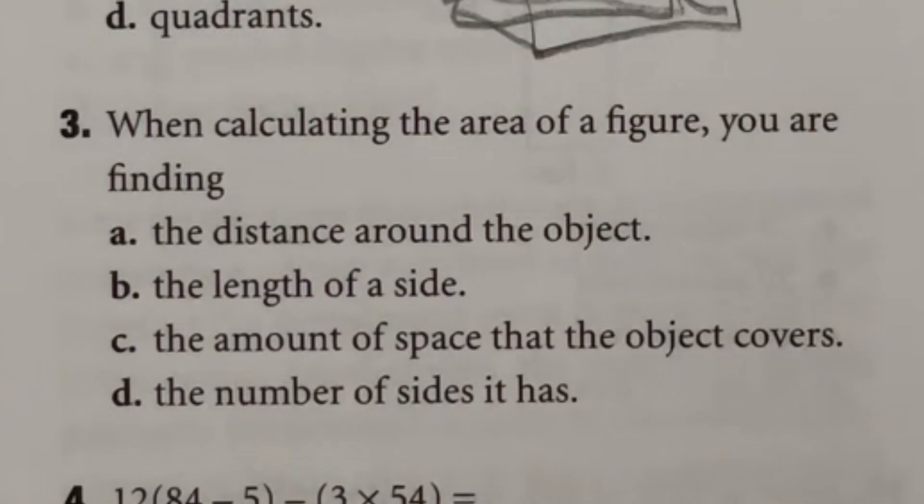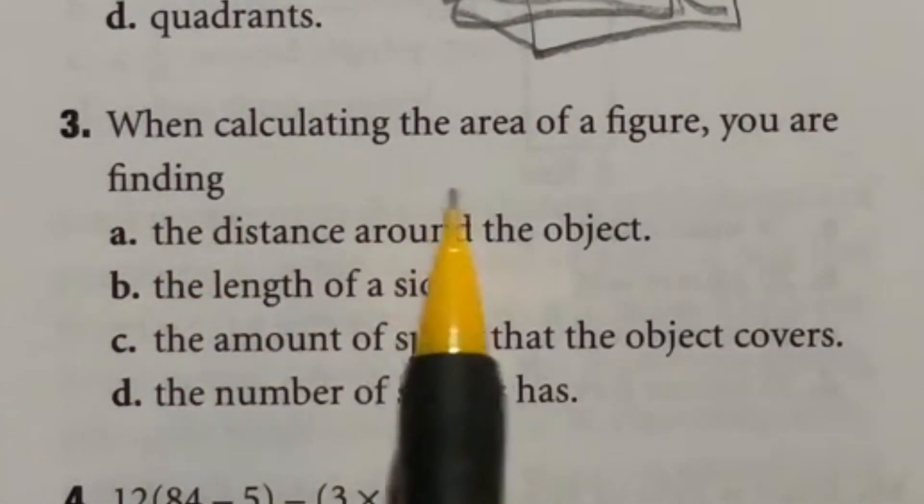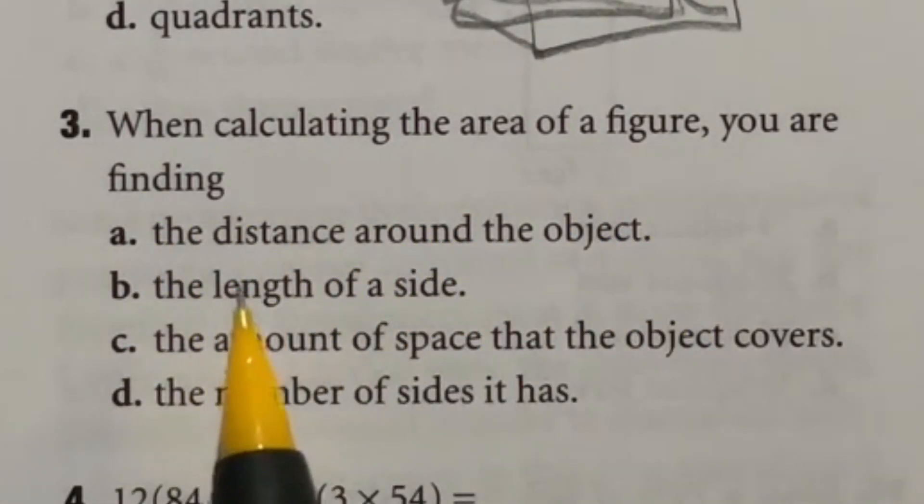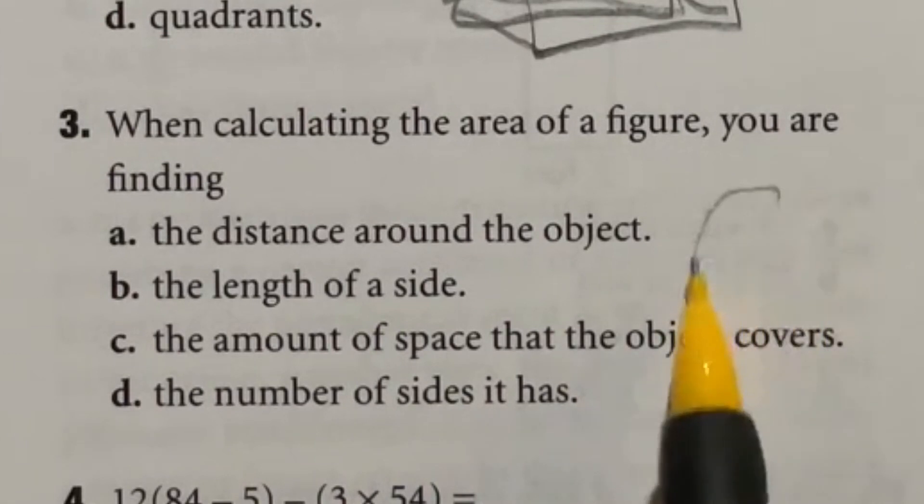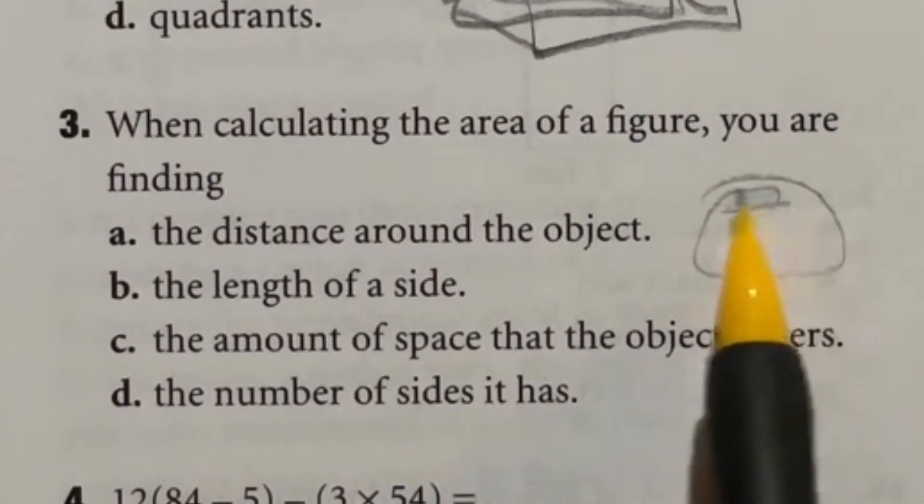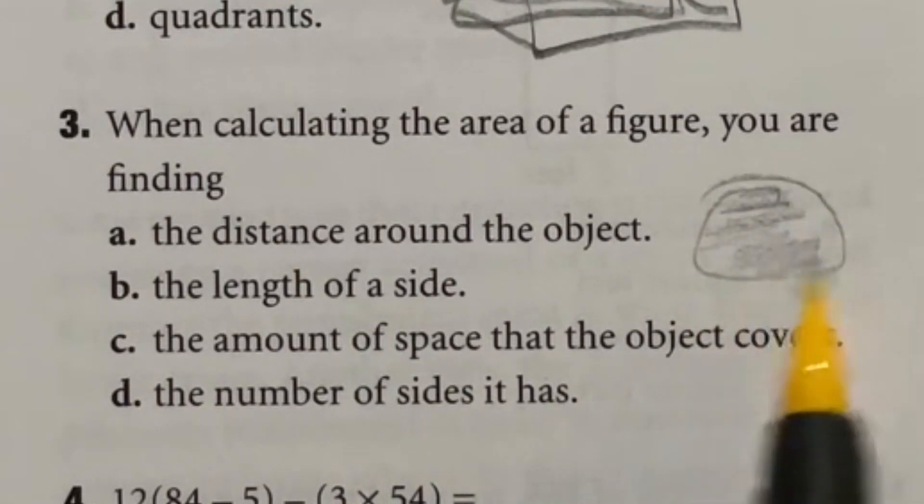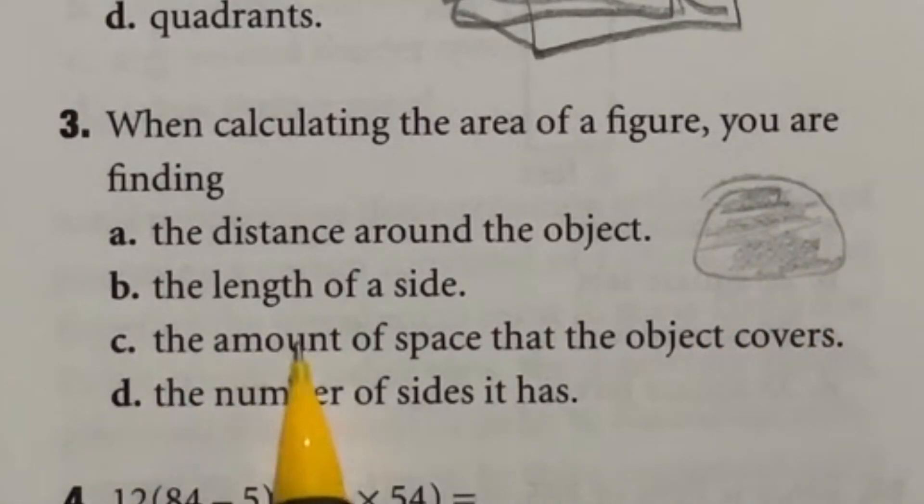So number three is a definition question. When you're calculating the area of a figure, you are finding the distance around the object, the length of a side, the amount of space that an object covers, or the number of sides it has. So if I'm looking at area here, I'm looking at everything inside of that shape, like how much area that it covers. So that's going to be the amount of space that the object covers, answer is C.